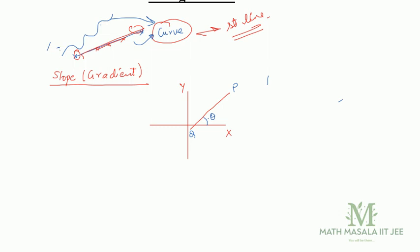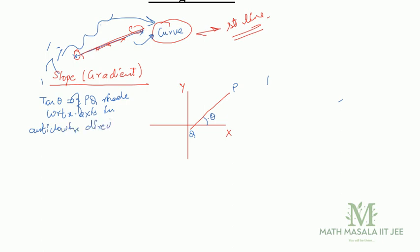So what I have said is that the tangent of the angle made by the line PQ with respect to the x-axis in the anticlockwise direction is called the slope. It is also denoted by m. So m is equal to the tangent of the angle which is made by line segment PQ with respect to the x-axis in the anticlockwise direction.